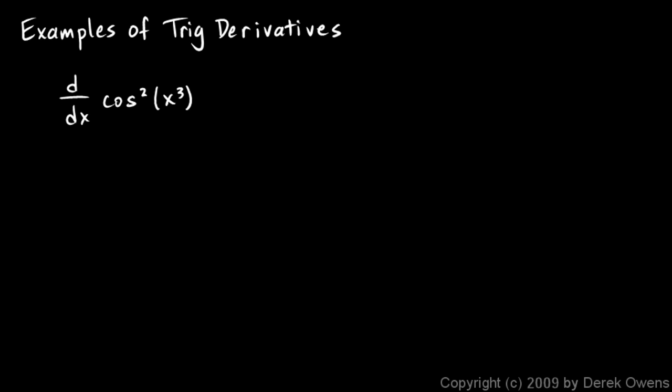So we'll apply the chain rule here, and the outer function is the squared part. So I'll first apply the power rule, and it'll be 2 times cosine of x cubed, all that to the first, times the derivative of cosine of x cubed. And the derivative of cosine is negative sine, so I get negative sine of x cubed times the derivative of x cubed, which is 3x squared.